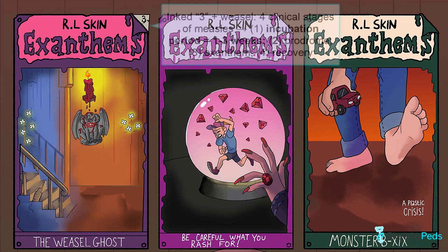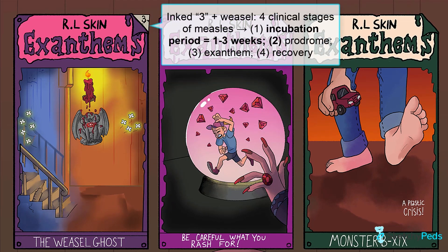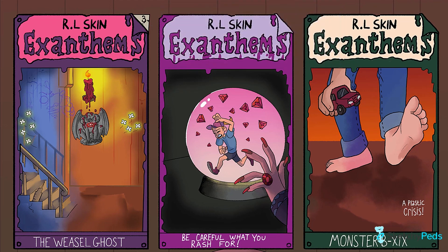There are four clinical stages that describe measles progression. The first is the incubation period, which lasts one to three weeks and is depicted by the number three in ink — get it? Incubation? — in the upper right-hand corner where the poster is dog-eared, like you're seeing a page number.